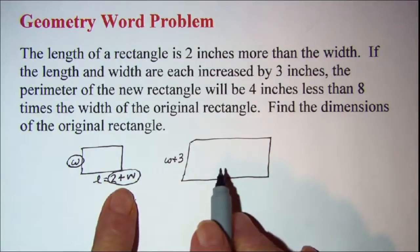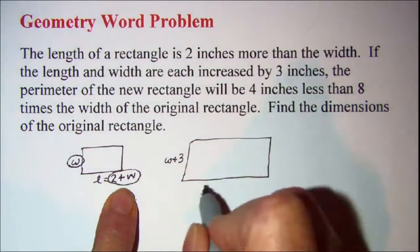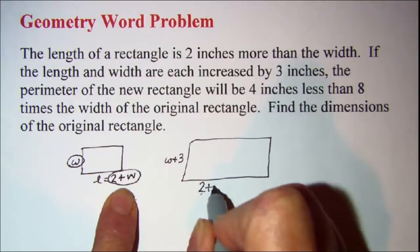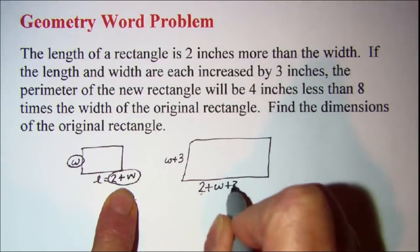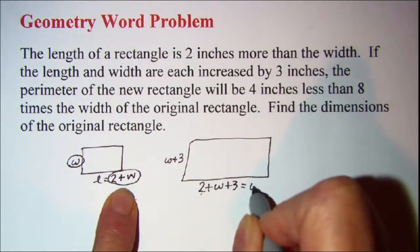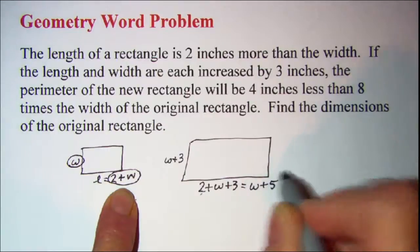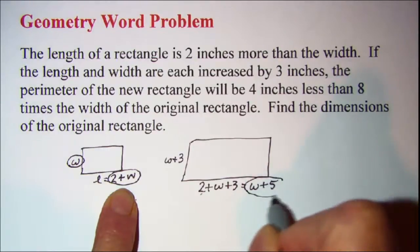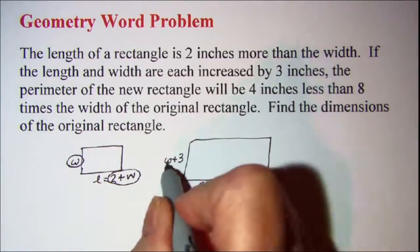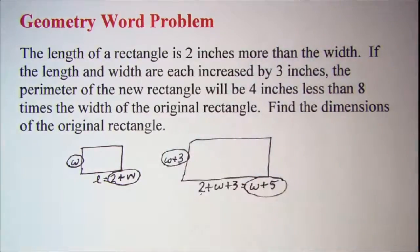And if I increase my length by 3, I'll have 2 plus W plus 3, which is W plus 5. Now this is the length of my new rectangle and this is the width of my new rectangle.